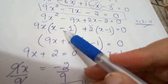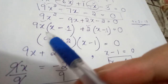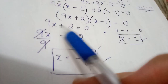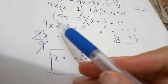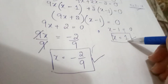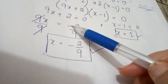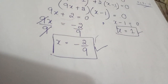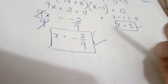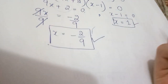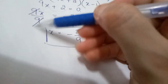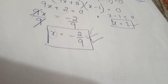Taking common from first two terms: 9x(x − 1), and from last two terms: 2(x − 1). This gives (9x + 2)(x − 1) = 0. Setting each factor to zero: x − 1 = 0 gives x = 1. For 9x + 2 = 0, move +2 to the other side to get 9x = −2, then divide both sides by 9: x = −2/9.